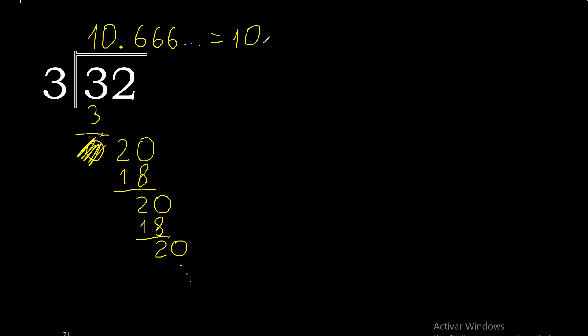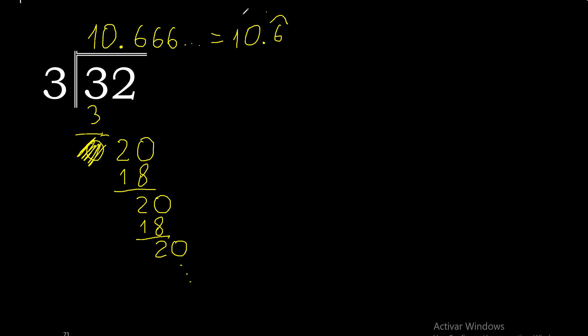10.6 repeats. Therefore, 32 divided by 3 is 10.6 repeating.